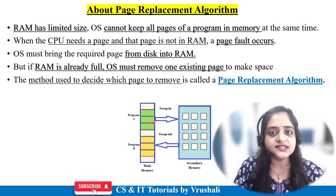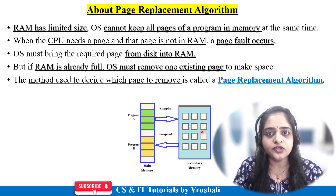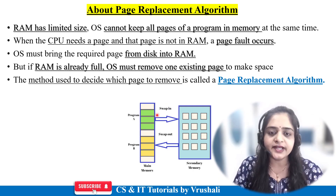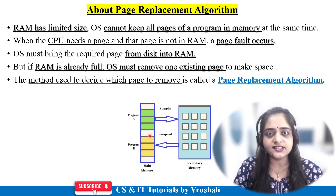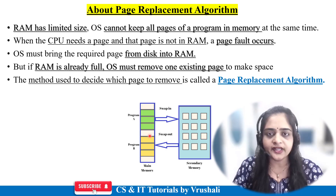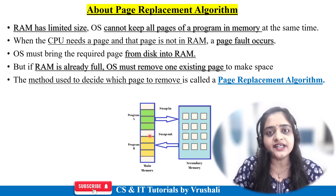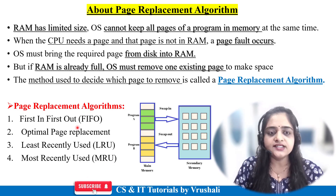The operating system removes some existing pages from main memory and swaps them into secondary memory, keeping only the pages required by the CPU for execution. If a particular page is already present, this is called a page hit. In operating systems, page replacement algorithms include First In First Out (FIFO), Optimal Page Replacement, LRU, and MRU.